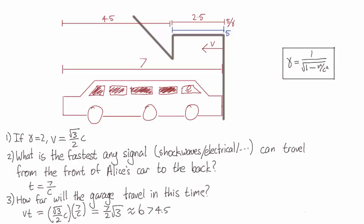So now we have a resolution to the paradox. There is no way that the back of the car can know that the front has crashed into the garage.